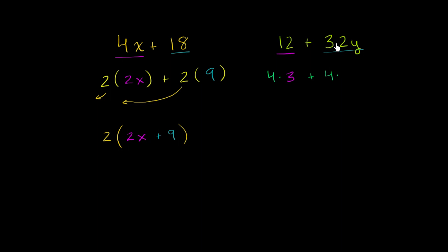well, if you divide 32y by 4, it's going to be 8y. And now, once again, we can factor out the 4. So this is going to be 4 times 3 plus 8y.